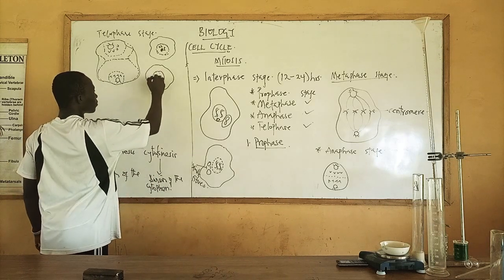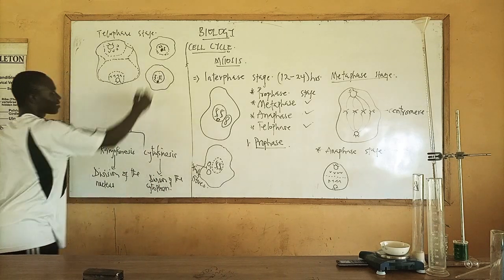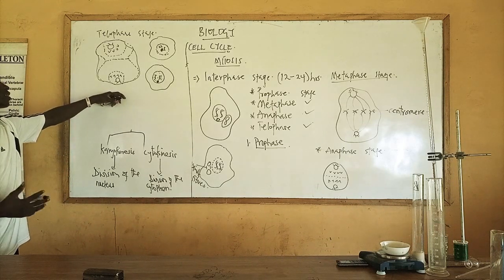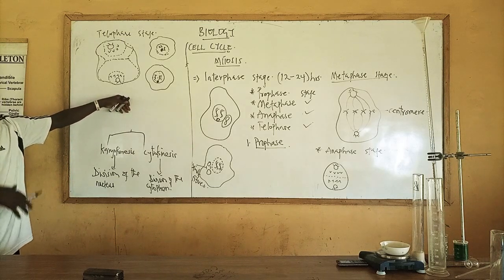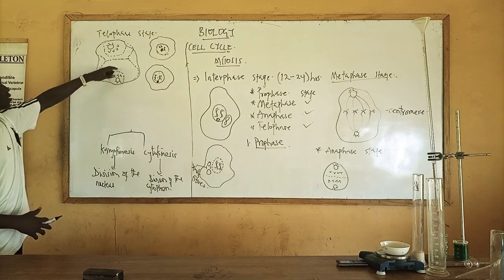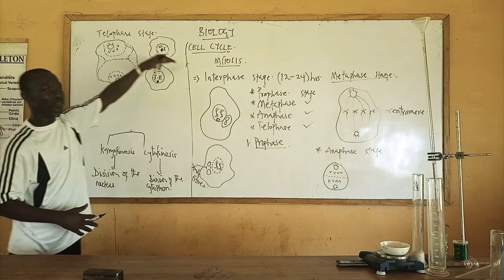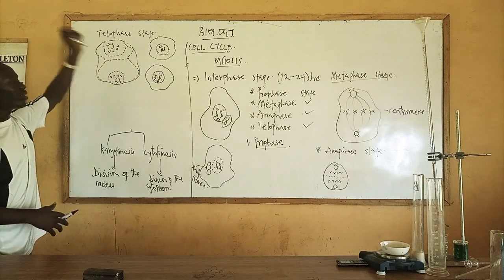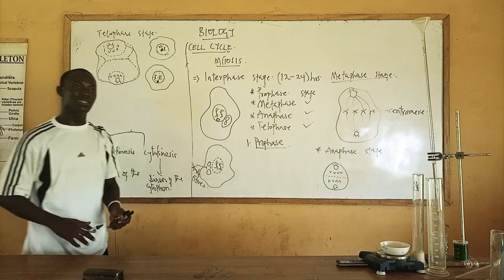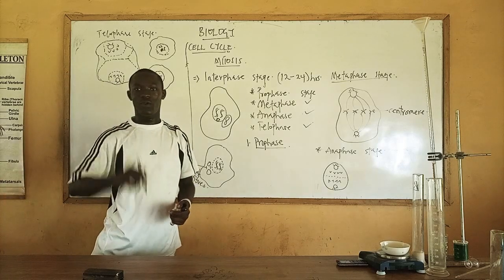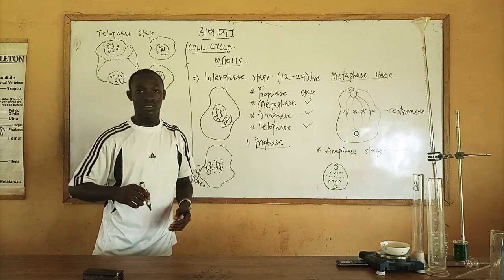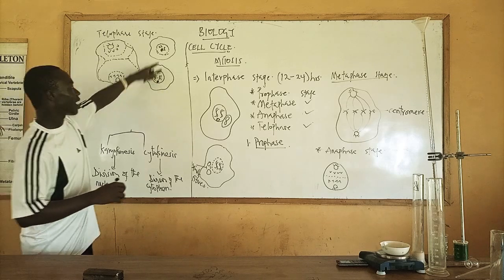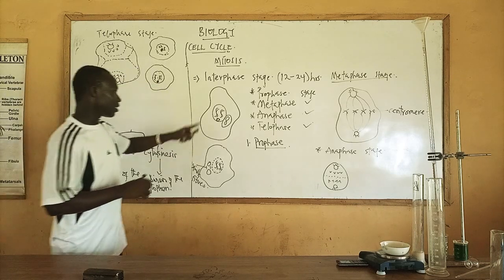Two identical daughter cells are formed at the telophase stage. Cytokinesis occurs, nuclear membranes reappear, and the cell divides equally, containing the same number of chromosomes and nuclear material. The number of chromosomes in the daughter cells is the same as that of the parent cell.